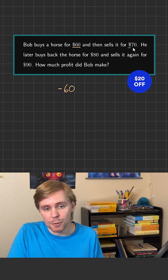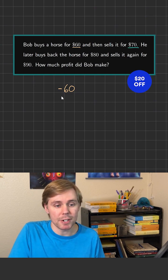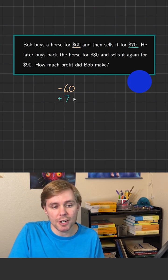But then when he goes and sells the horse for $70, he is earning $70. So that's going to be a transaction of plus $70.